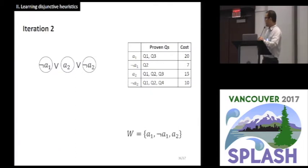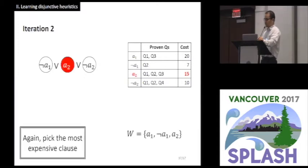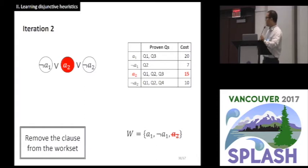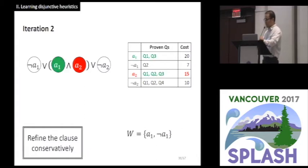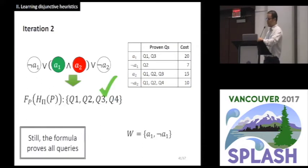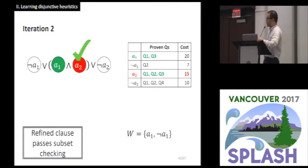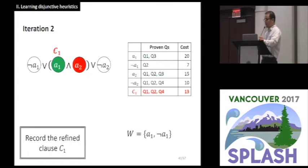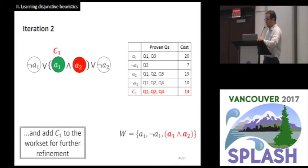Since the work set is not empty, we need another round. Again, we pick the most expensive clause. In this case, A2. Then we remove the clause from the work set. Then we refine the clause conservatively. In this case, A1 is chosen. And the refined formula still proves all queries. But this time, the refinement results in a semantically different formula. In this case, we add the refined clause to the performance table and the work set. This is the end of the second iteration.